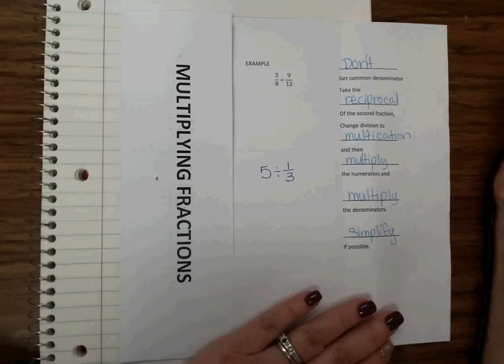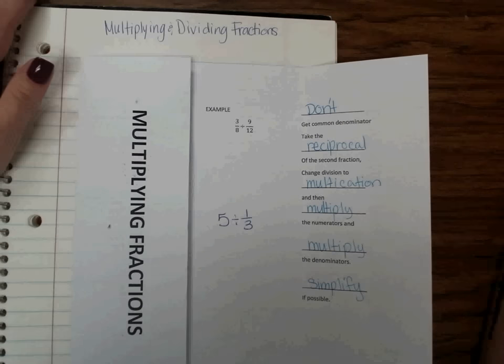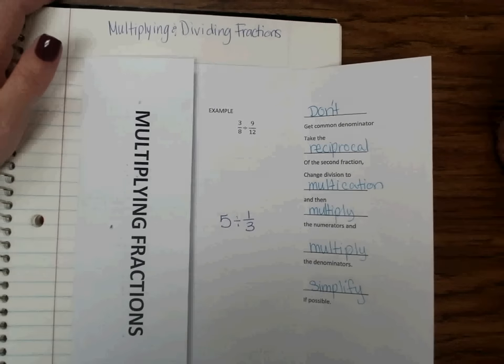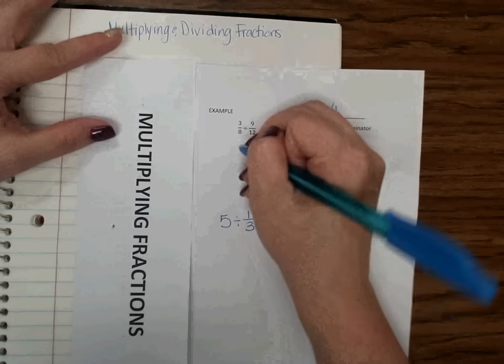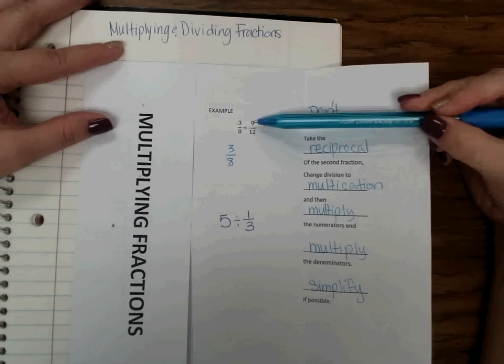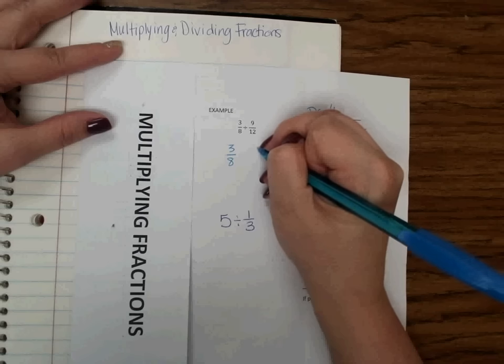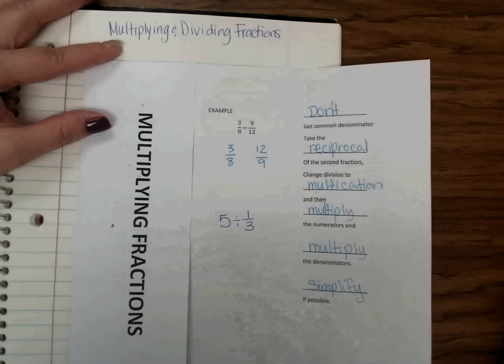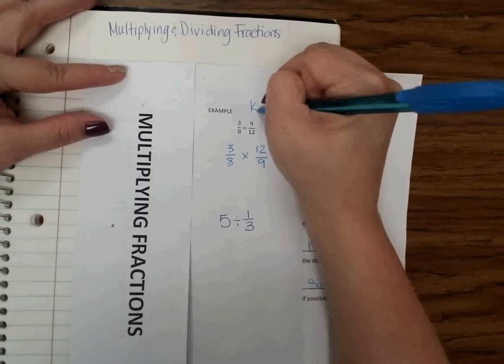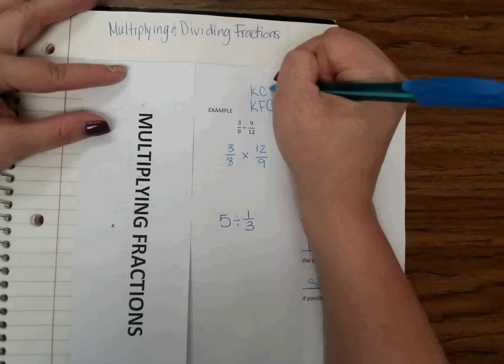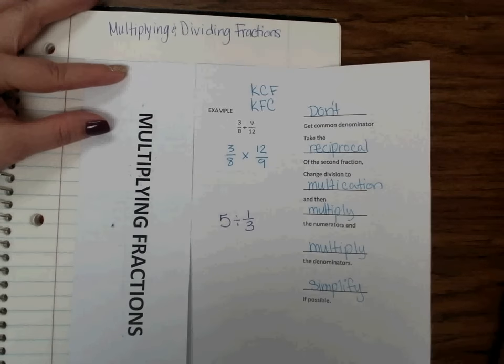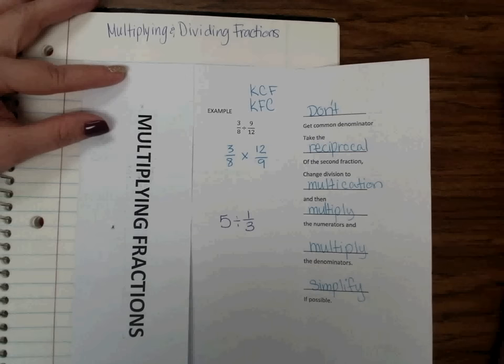So let's see what that looks like using our example here. I have 3 eighths divided by 9 twelfths. We don't get a common denominator, but we need to take the reciprocal of the second fraction. We need to flip that second fraction. So I rewrite it. I'm going to rewrite the 3 eighths. That stays 3 eighths. And I'm going to take a flip or reciprocal of this second number. So instead of 9 over 12, it becomes 12 over 9. And then my division becomes a multiplication problem. Sometimes we remember this by saying KFC, like Kentucky Fried Chicken. But it's really KCF. Keep, change, flip. So I keep my first number, I change my division to multiplication, and I flip my second number. And then I can multiply.